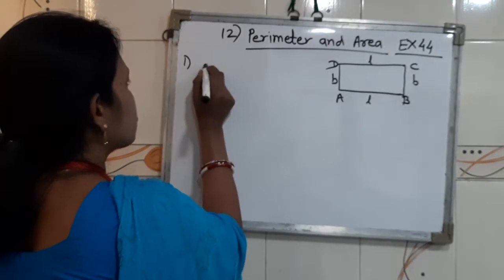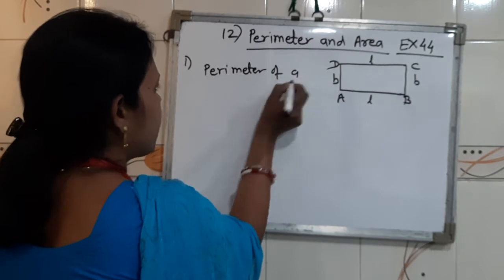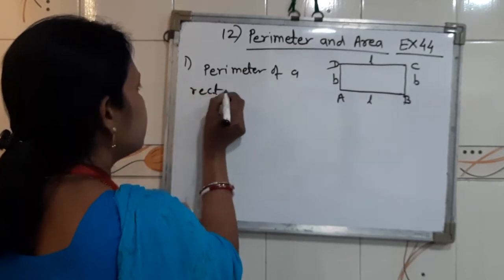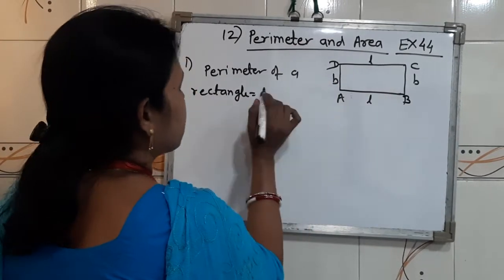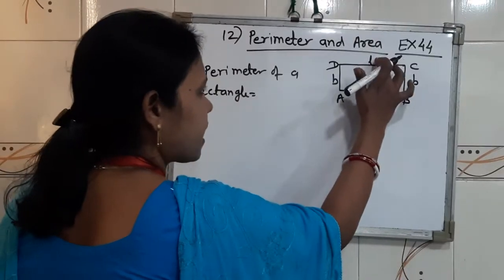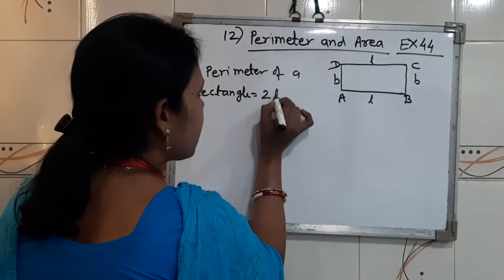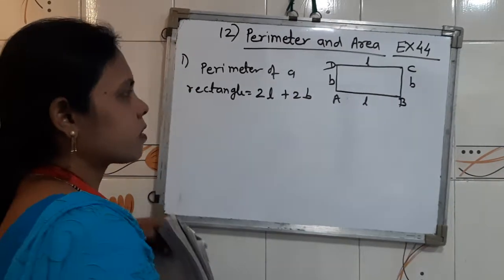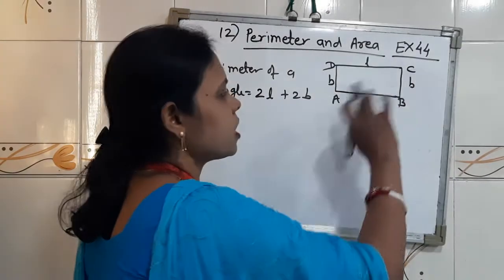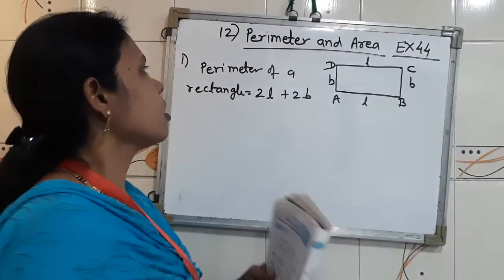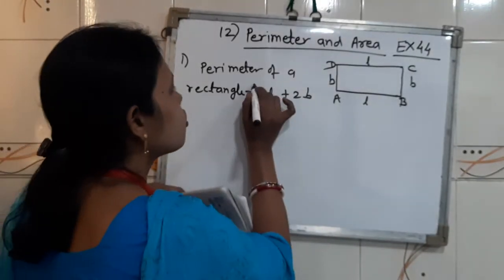Write down the first question. Perimeter of a rectangle: here one length and here second length, therefore we write two length plus two breadth. I hope you all got it. Here, length plus length equals two L, and B plus B equals two B. Therefore, the formula for perimeter of a rectangle is 2L + 2B.